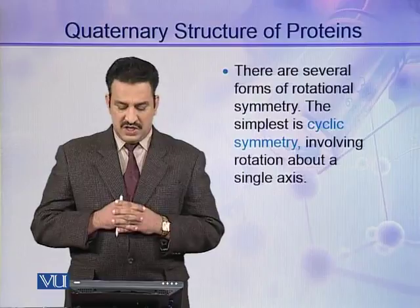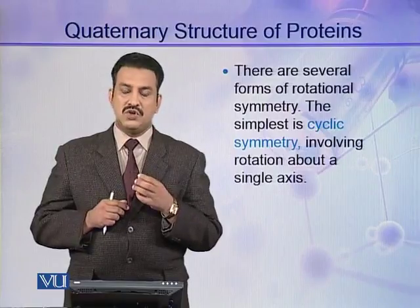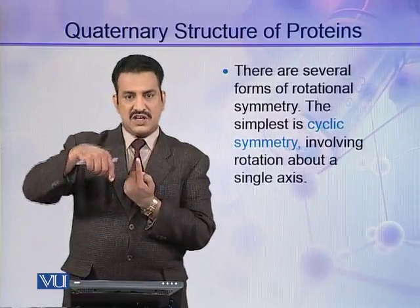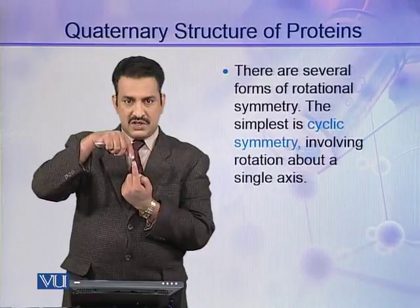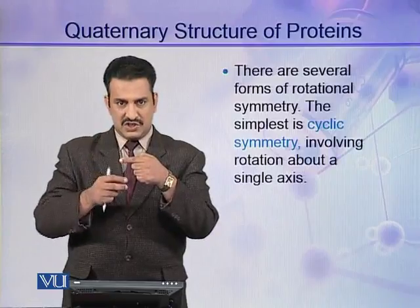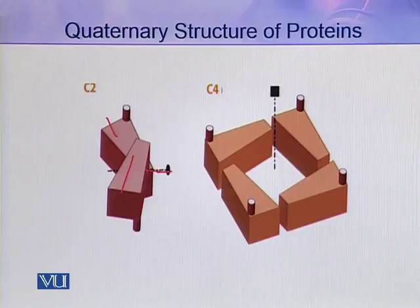In cyclic symmetry, there is a single axis of rotation. That means the oligomers or protomers rotate around a single axis. In this picture, you can see two protomers — one is this and the other one is this — and they have a single rotational axis. Around this rotational axis they can rotate. So there is only a single rotational axis. This is called cyclic symmetry.